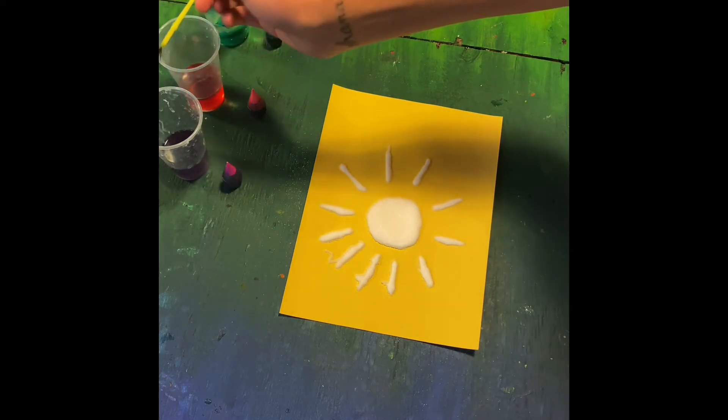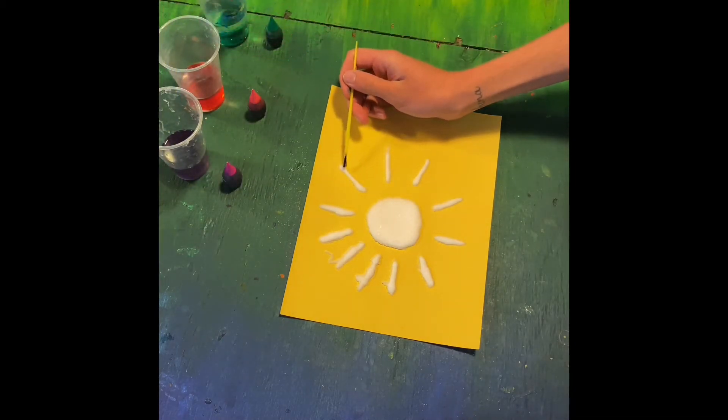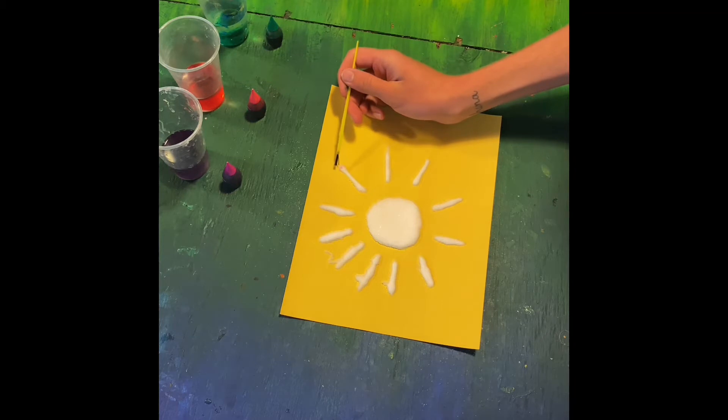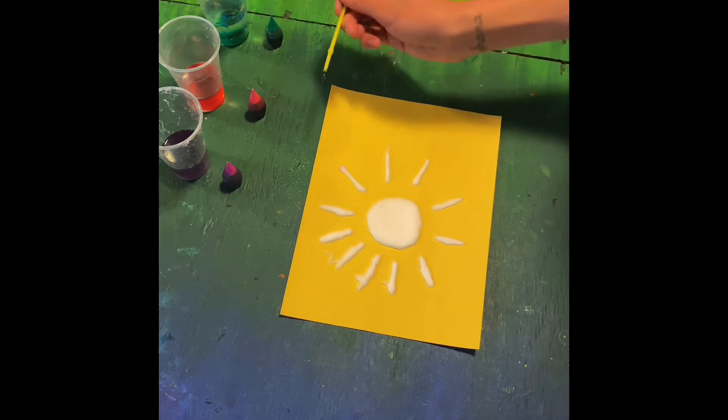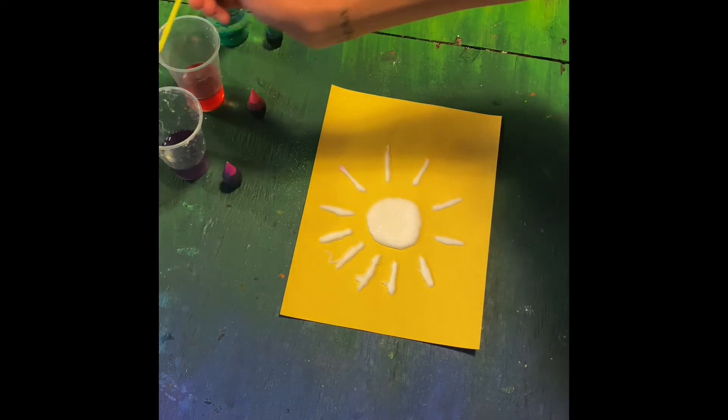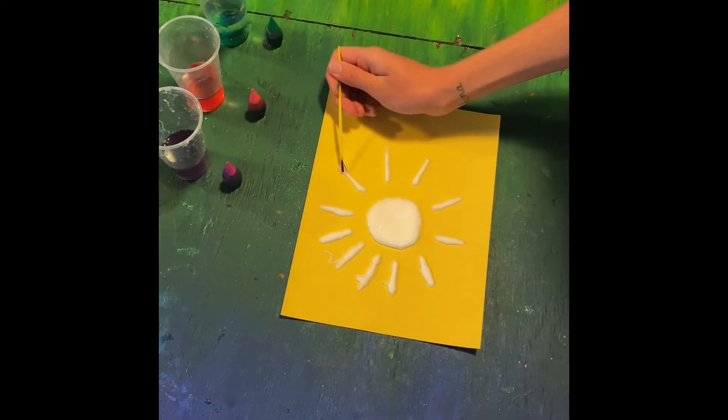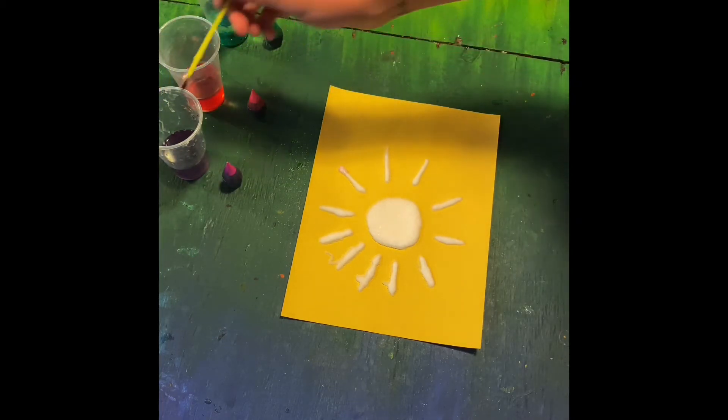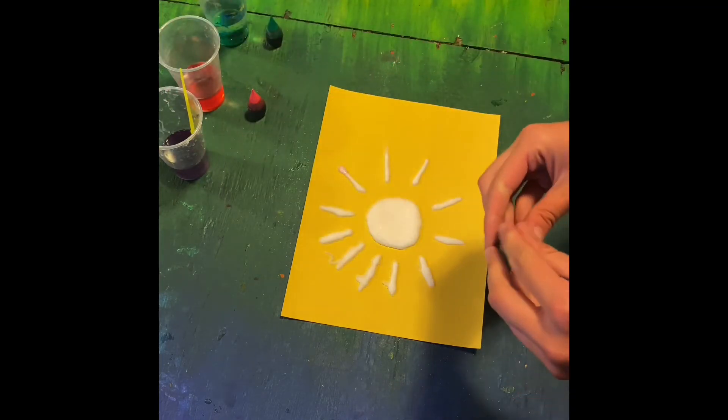So with my brush, once I have the color on it, I'm just going to go like this and the salt is going to soak up the color. So see how that's, if you can't really see it, it's probably really light. So this is where you add more dye. So I'm going to add another drop.